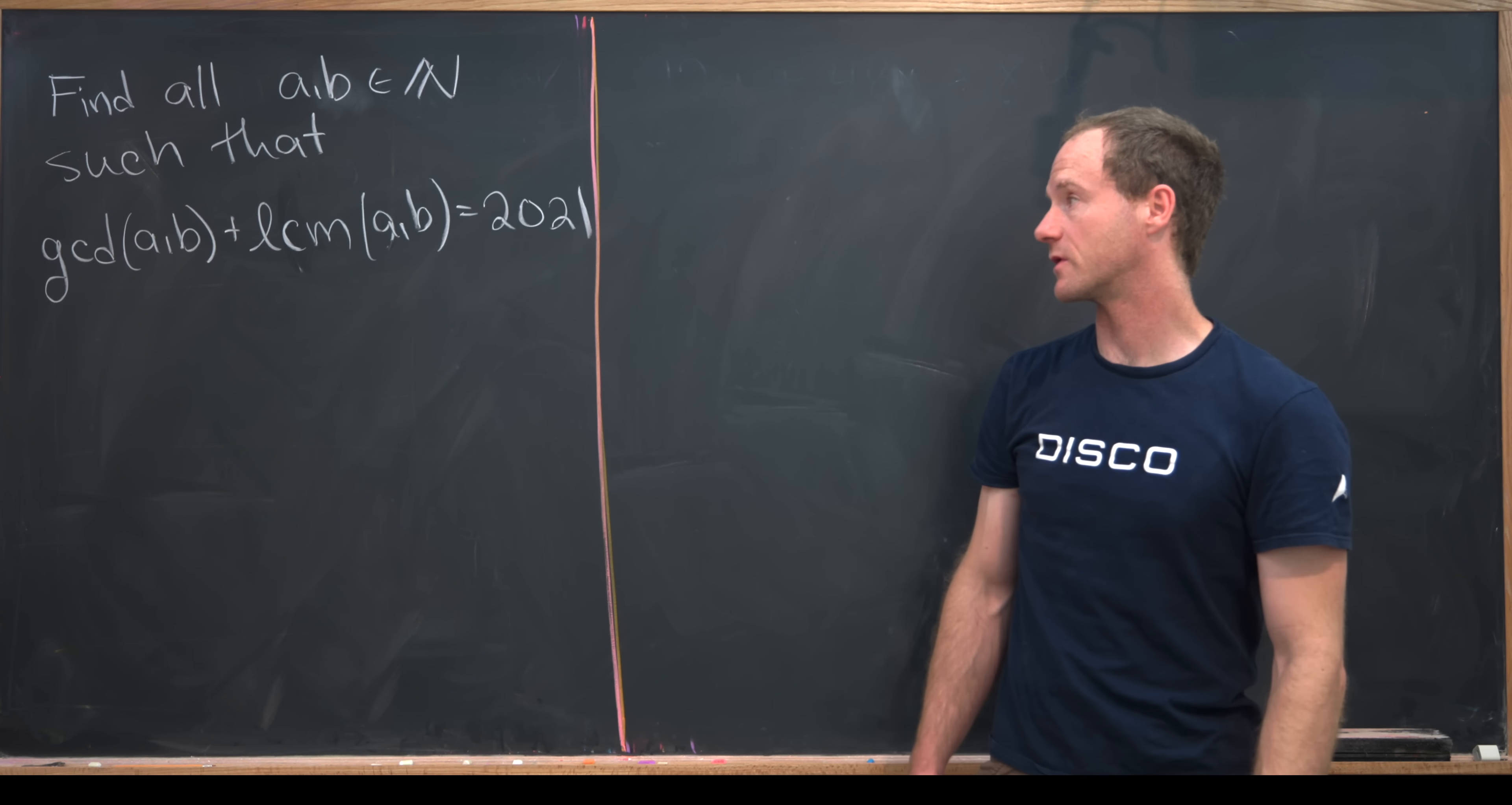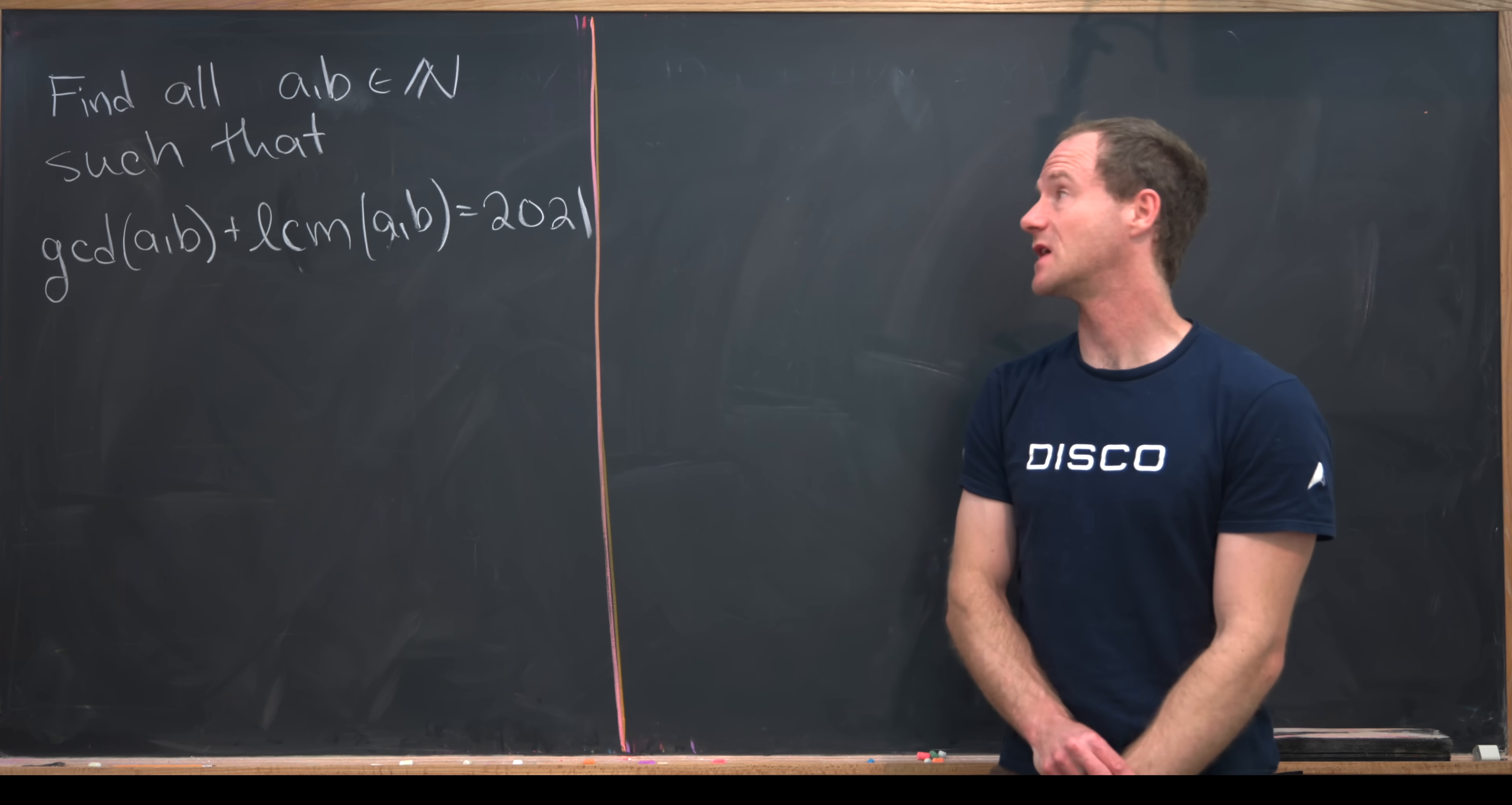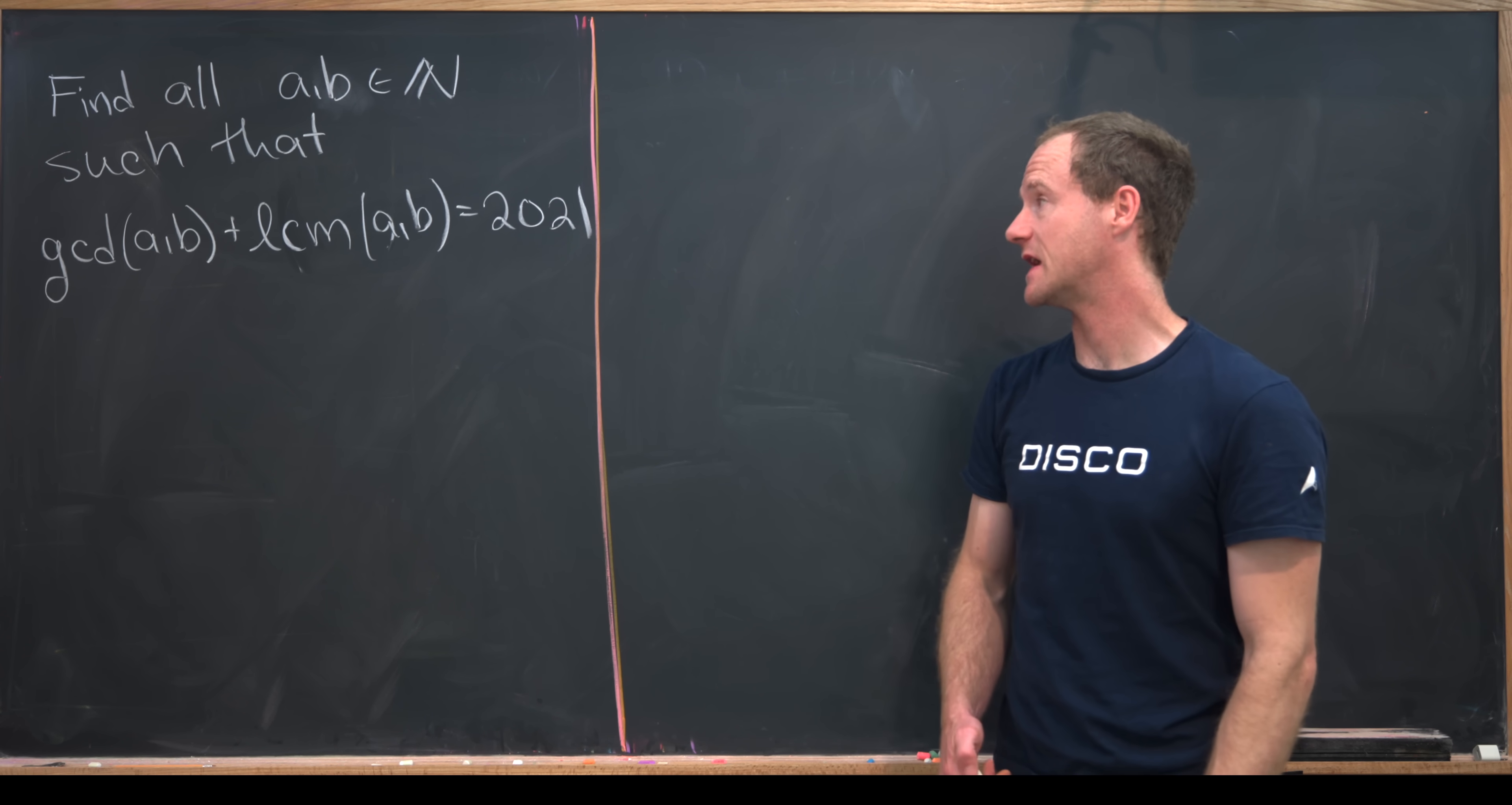Here I've got a nice elementary number theory problem to show you the solution for. Our goal is to find all natural numbers A and B such that the GCD of A and B plus the LCM of A and B is equal to 2021.